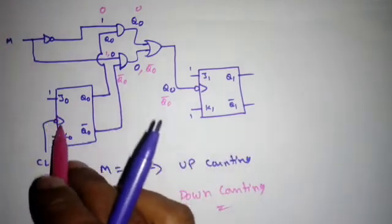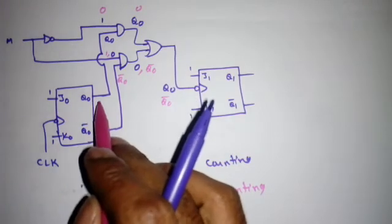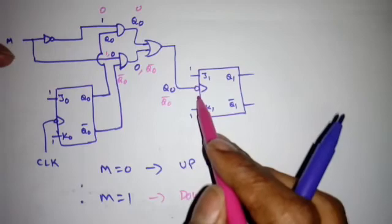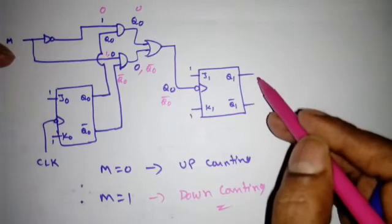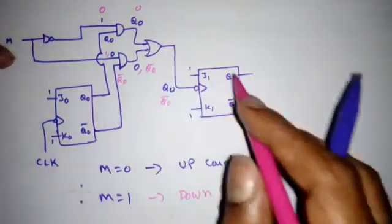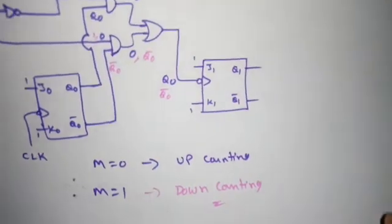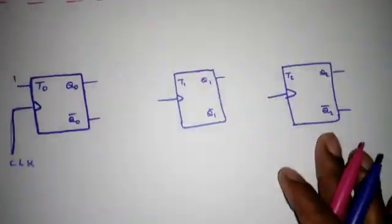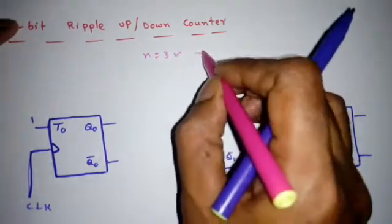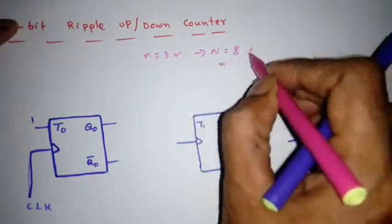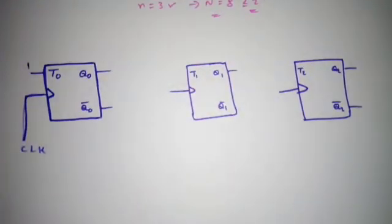The operation is straightforward: on the negative edge, Q0 always changes state, and that signal propagates as the next flip-flop's clock. Now we will look at a 3-bit up-down ripple counter using positive-edge-triggered flip-flops. For a 3-bit counter, the number of flip-flops is 3 and the maximum count is N=8 (2^3).